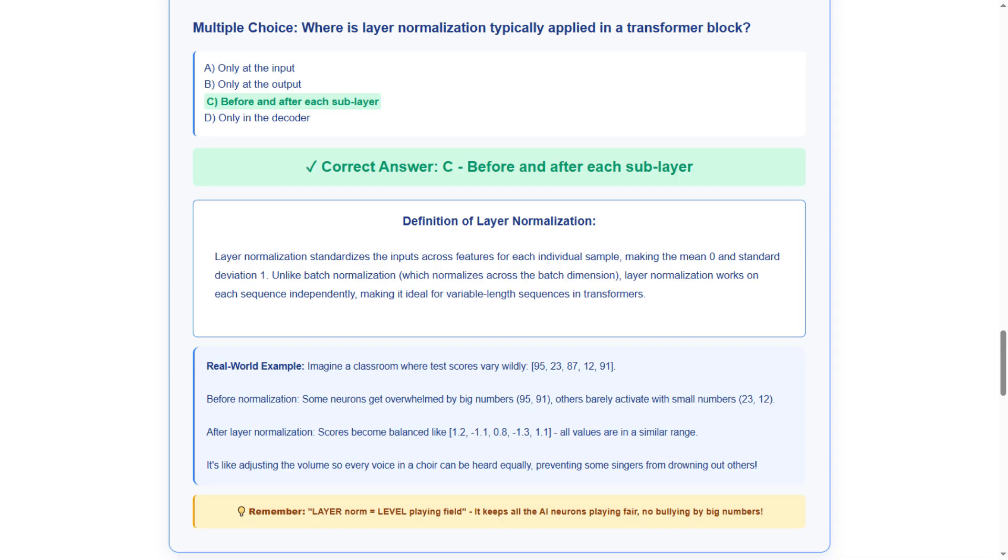The correct answer is C, before and after each sublayer. We selected this because layer normalization is strategically placed multiple times throughout the transformer to maintain stable gradients and consistent value ranges at every processing stage. Layer normalization standardizes the inputs across features for each individual sample, making the mean 0 and standard deviation 1.